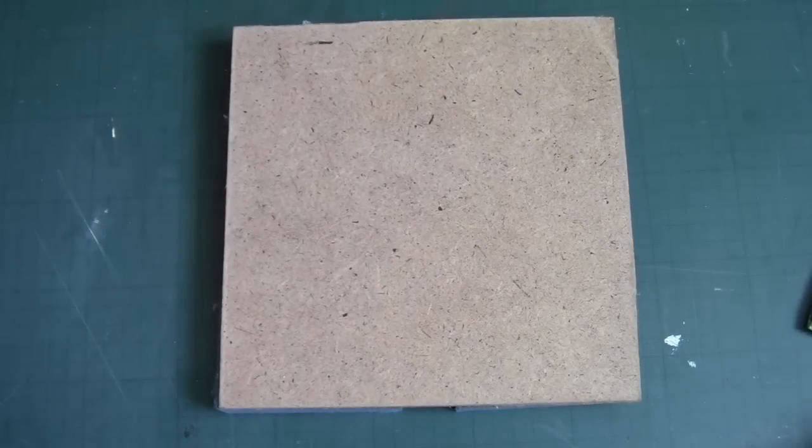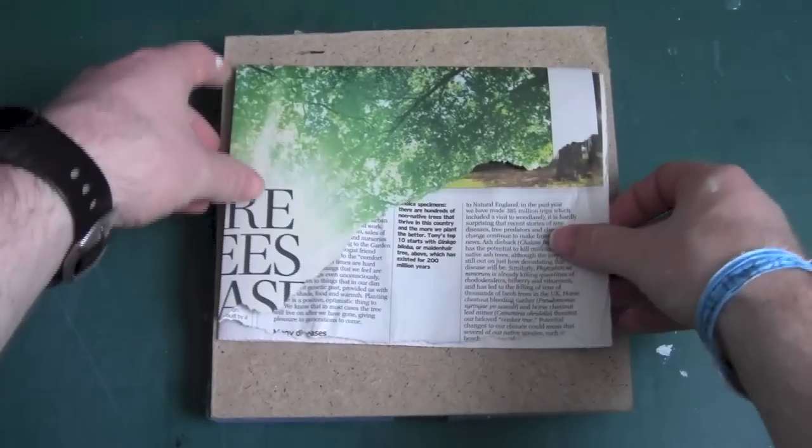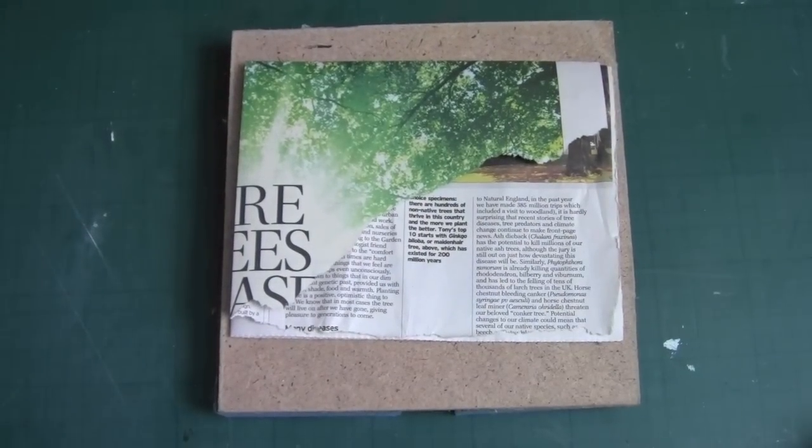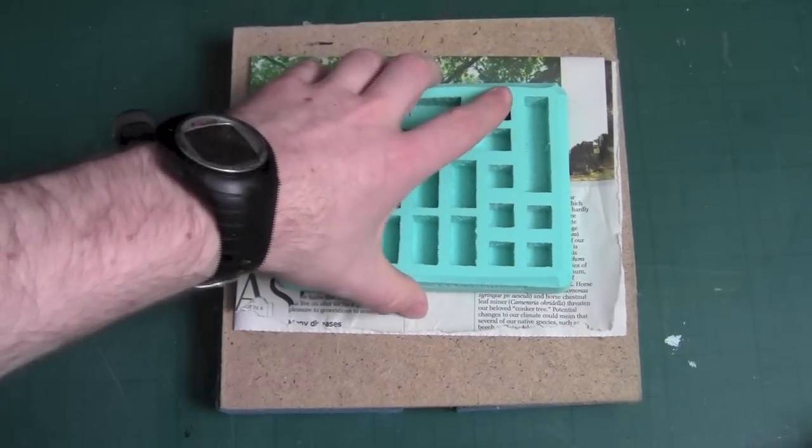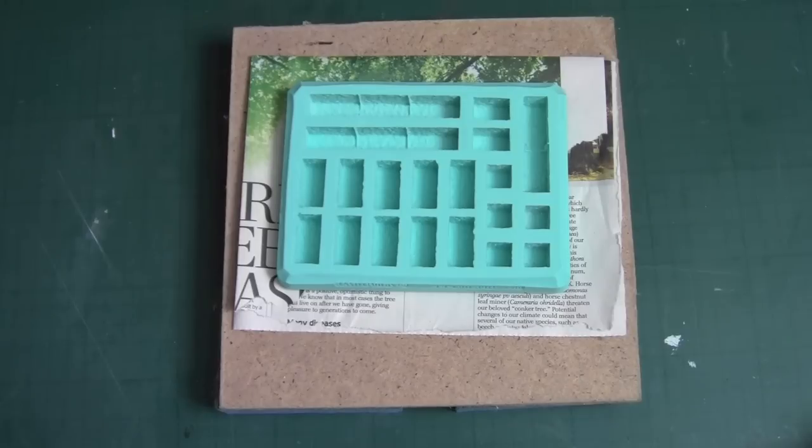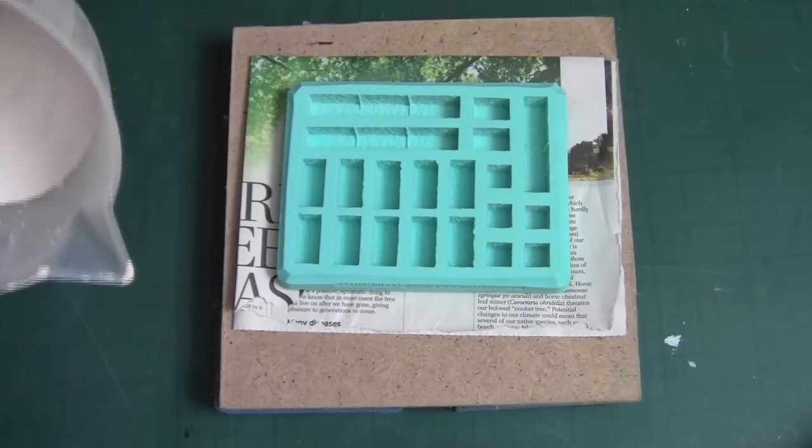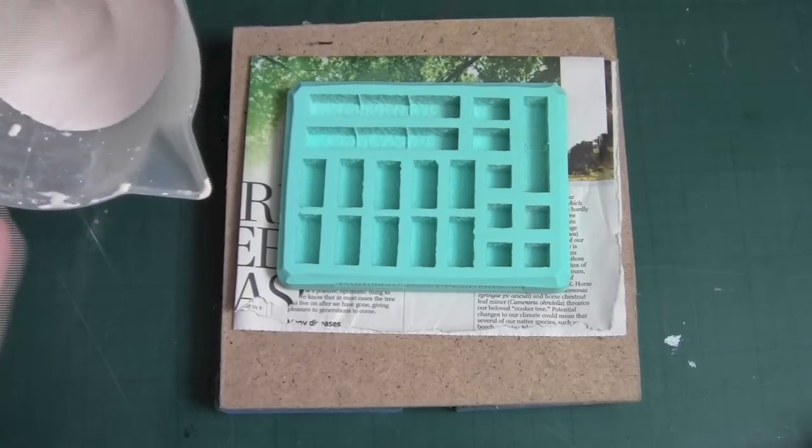Now that we've made the sponge board, it's time to try it out. Get a scrap bit of newspaper and place it on top of the sponge board. This is going to be used so that when we scrape the mold, any excess material such as plaster will land on that and not the top of the sponge board.